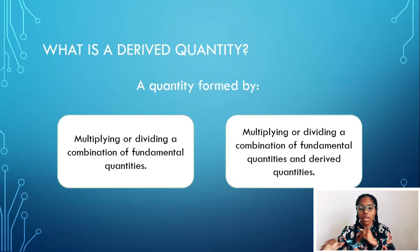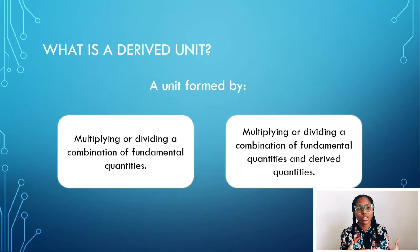So how is our derived unit formed? A derived unit is formed exactly the same way. The same way you'd get that derived quantity, you'd do exactly the same thing, and the unit that you get from that is your derived unit. This may seem strange right now, but when we try one, I think you'll understand what I mean.